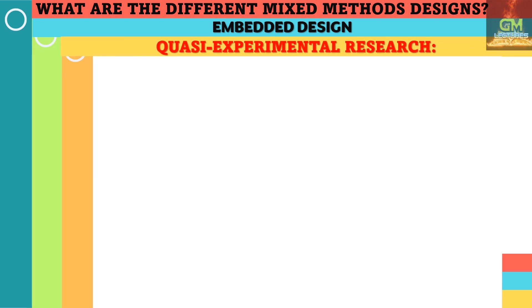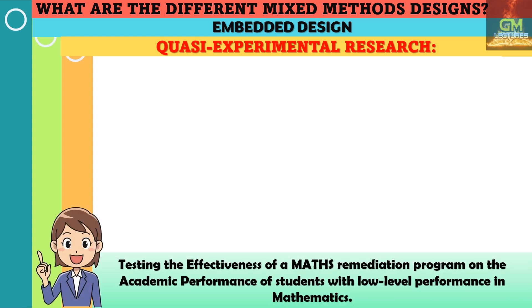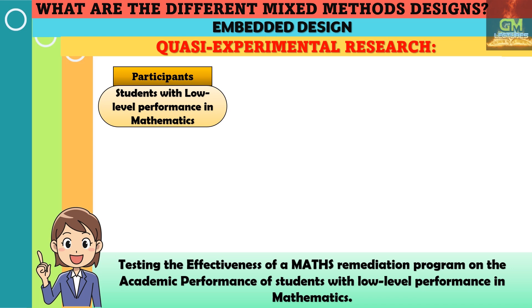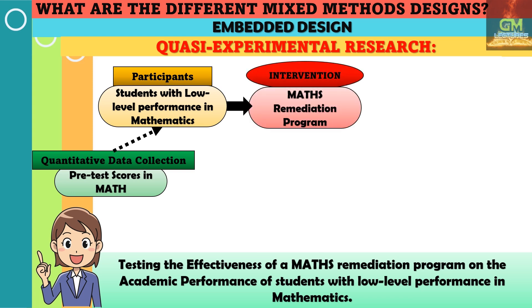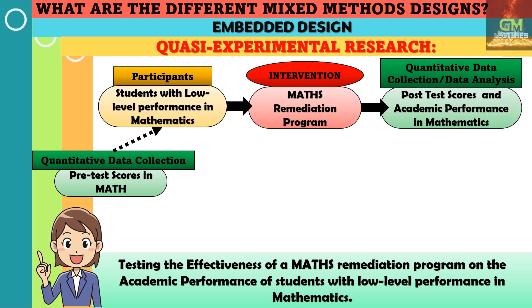Let's focus on this example, which is a quasi-experimental research. This example's objective is testing the effectiveness of a maths remediation program on the academic performance of students with low-level performance in mathematics. As this is a quasi-experimental research, the participants — students with low-level performance in mathematics — are identified through a pretest in order to determine said students. After the participants have been identified, they shall undergo an intervention, which in this case is the maths remediation program. After the program has been completed, they will undergo a post-test to determine their academic performance in mathematics.